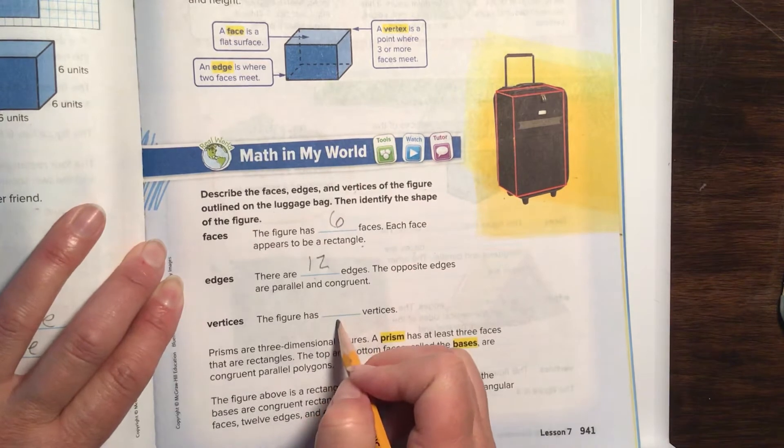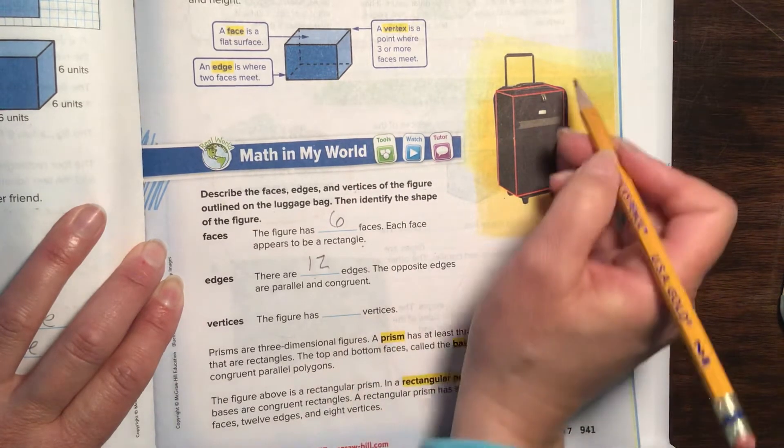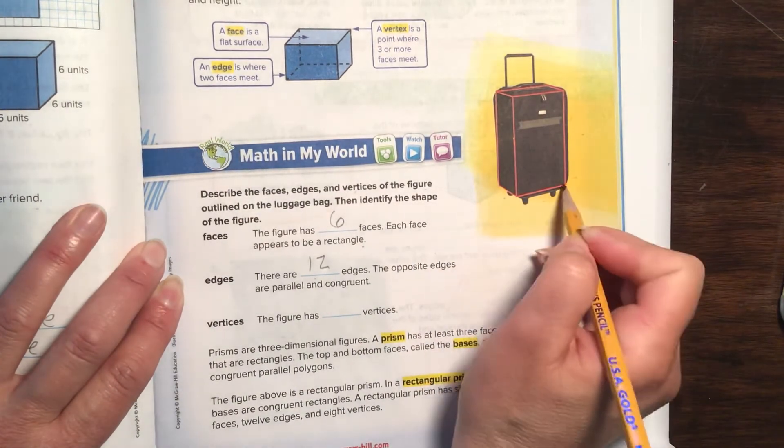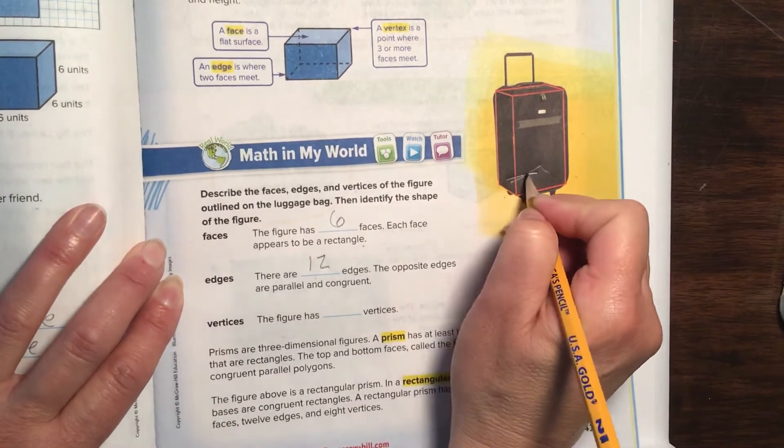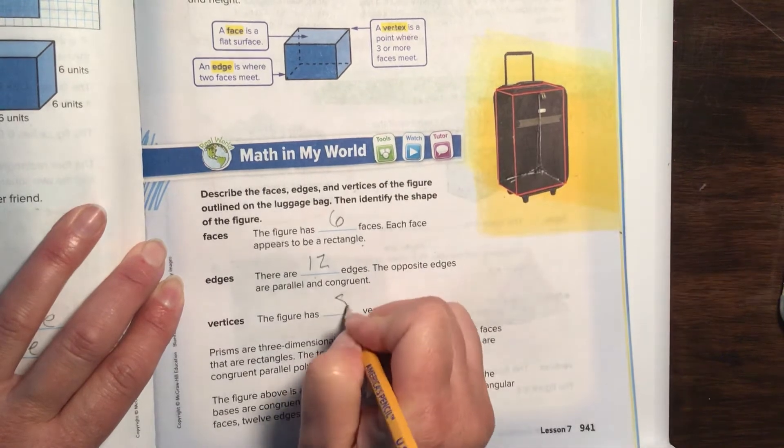The figure has how many vertices or points? If we were to count all these points: one, two, three, four. And then there's four on the bottom: five, six, seven, eight. That helps me out a little bit.